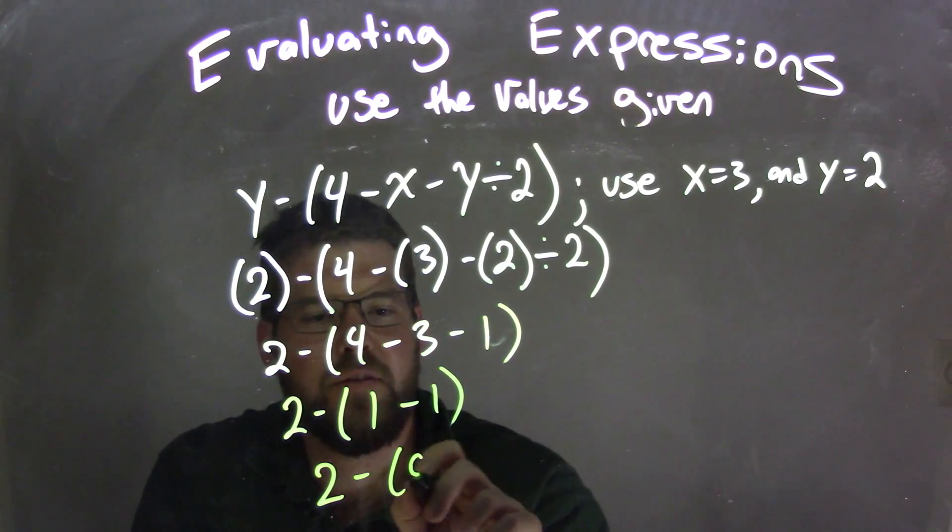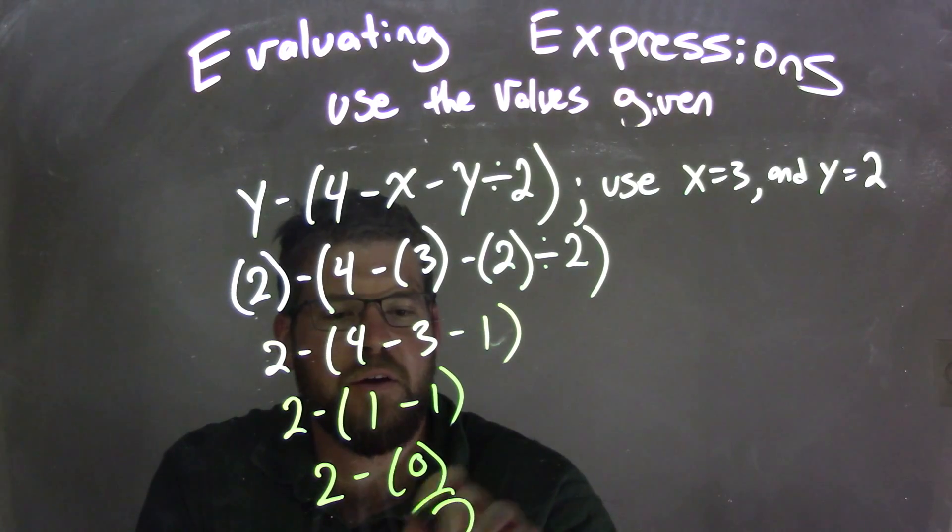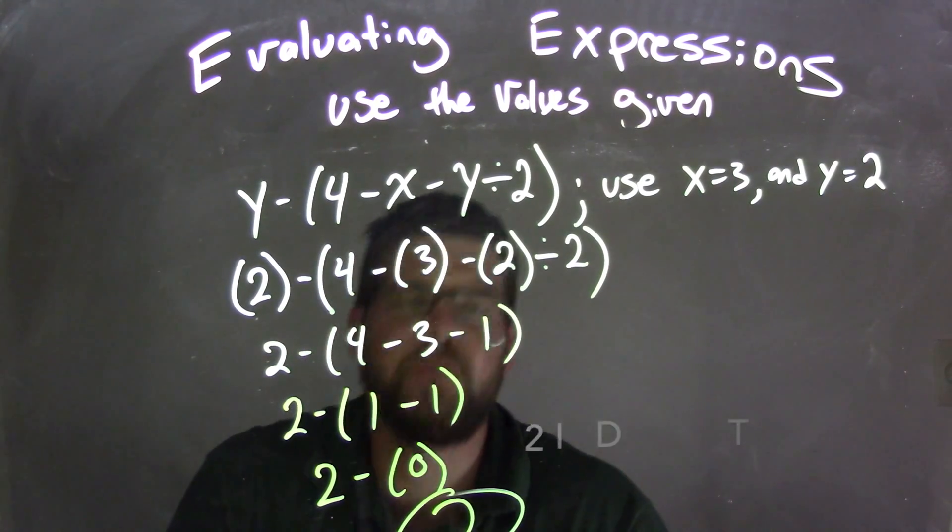So we have 2 minus 0, and 2 minus 0 is good old 2, and that's our final answer.